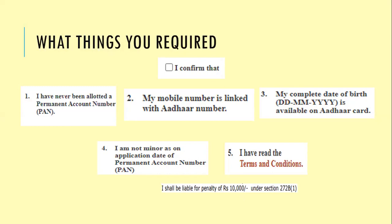The second confirmation: your mobile number must be linked with your Aadhaar card — that is very mandatory, then only you can apply for the instant PAN card. Very importantly, check your Aadhaar card whether the full date of birth is printed or not. If your full date of birth is not printed, please update the Aadhaar card first, because PAN card requires the full date of birth — that is date, month, and year, not just year or month and year.